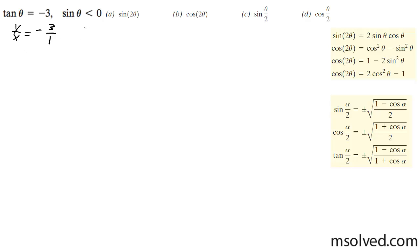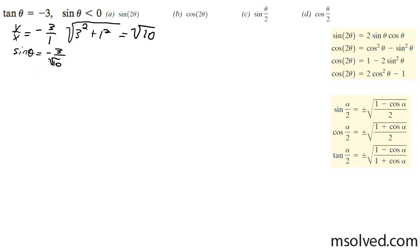The hypotenuse is the square root of 3 squared plus 1 squared, which equals the square root of 10. This means sine is equal to negative 3 over the square root of 10, and cosine is equal to 1 over the square root of 10.